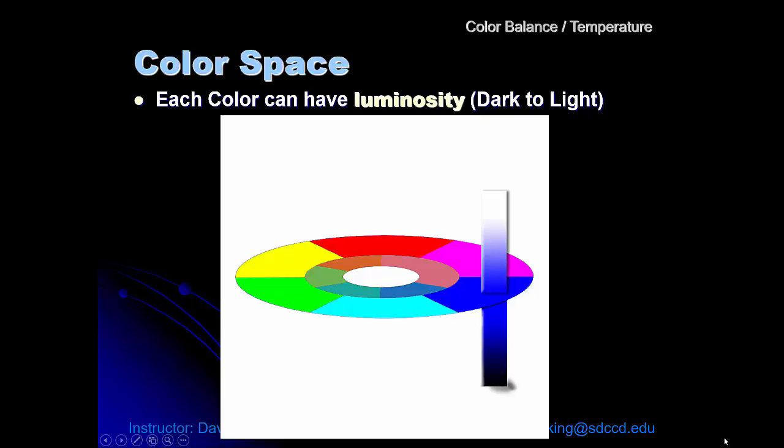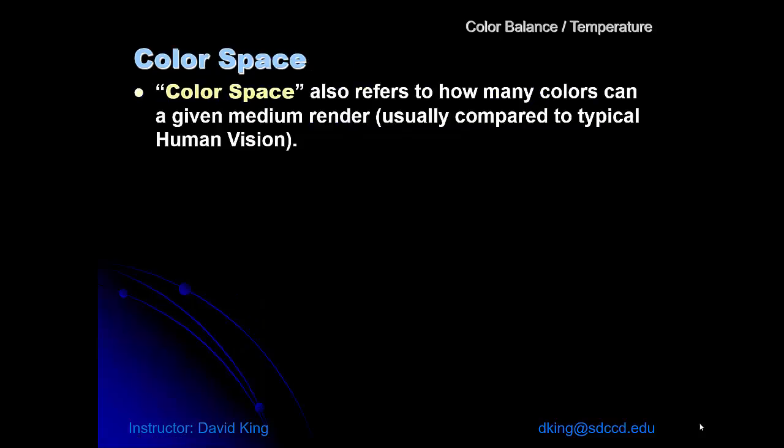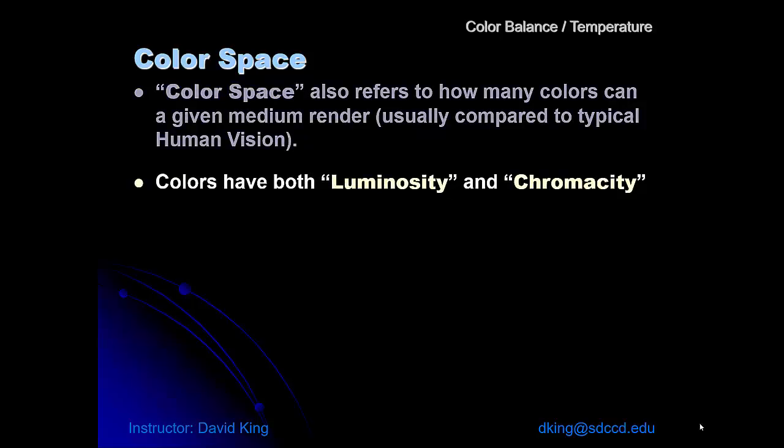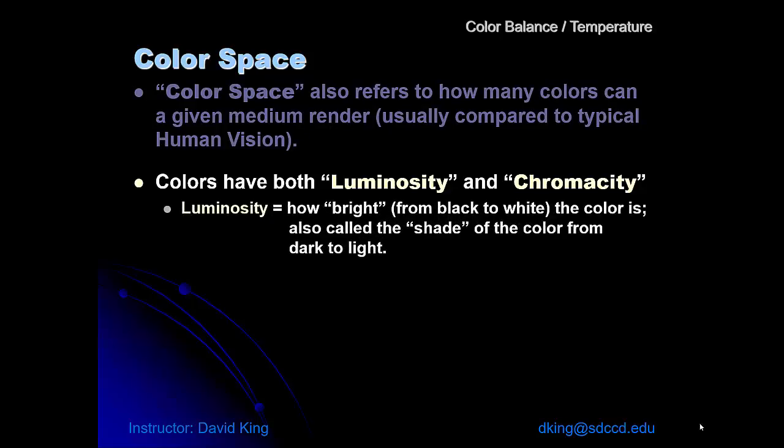Color space refers to how many colors a given medium can render compared to typical human vision. Those colors can have both luminosity and chromacity. Luminosity is how bright is it from black to white. This is often called the shade of the color, from dark to light.